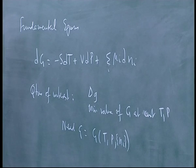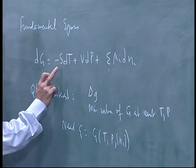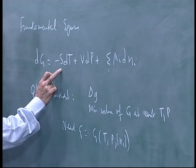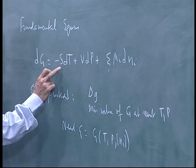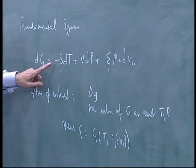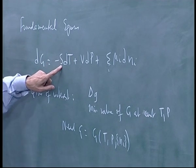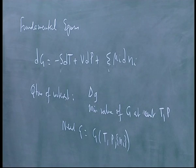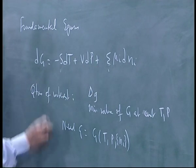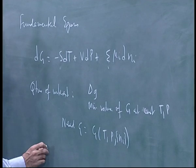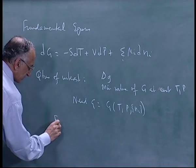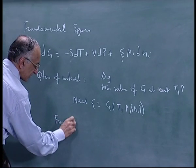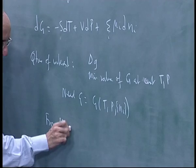These are the quantities you need. For example, if you want to know how S varies, you go back to Maxwell relations and find S with respect to P and so on. The only thing you cannot get from Maxwell relations alone is the full composition dependence.